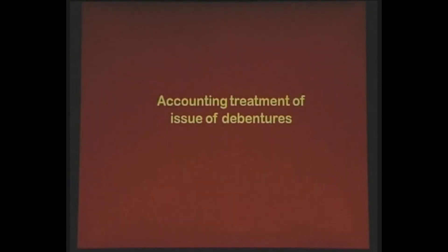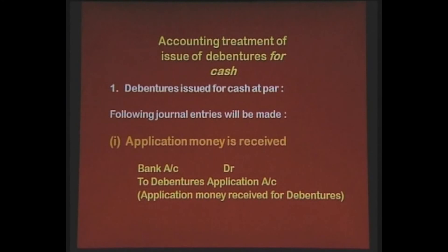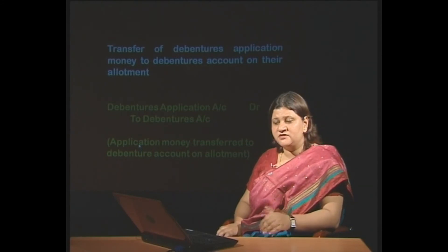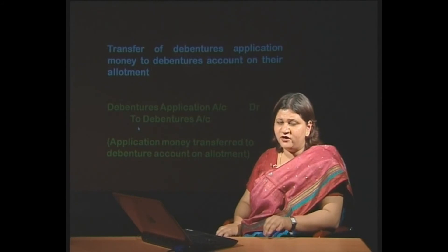Let us understand the accounting treatment of issue of debentures for cash — this is the first situation. Here, debentures are issued for cash at par, meaning equal to the nominal value or face value of the debentures. Following general entries will be made. First, application money is received: bank account debit to debenture application account — application money received for debentures. When allotment is made, application money is transferred: debenture application account debit to debentures account — application money transferred to debenture account on allotment. Because whatever money received on applications will become part of debentures only when allotment is made, similar to the issue of shares.